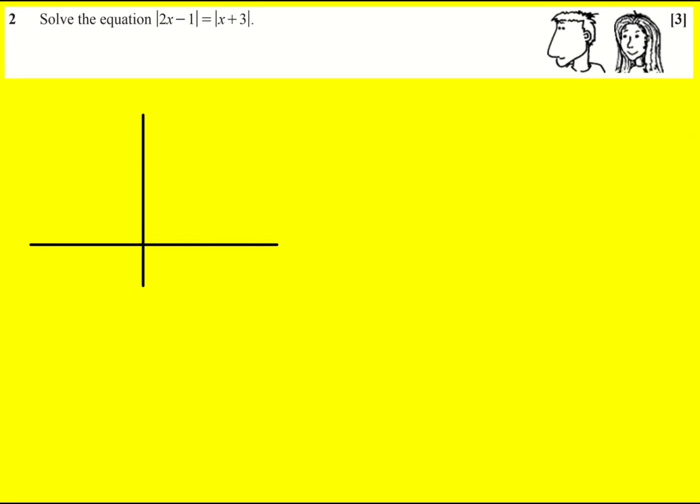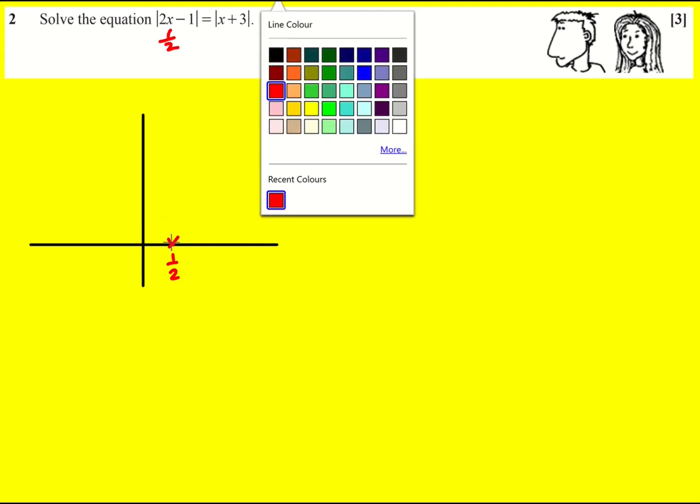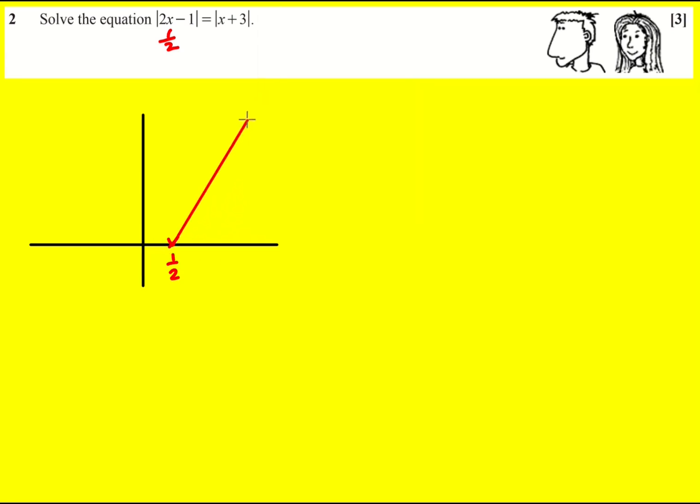Let's first sketch y = |2x-1|. The critical point is at x = 1/2, and it's a straight line that bounces off this point symmetrically. When x is zero, it goes through 1.